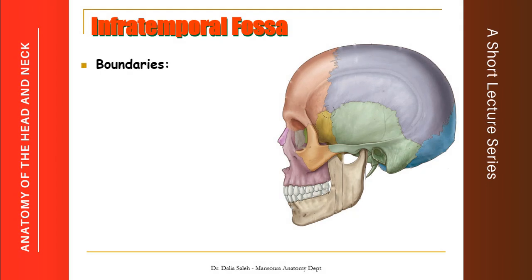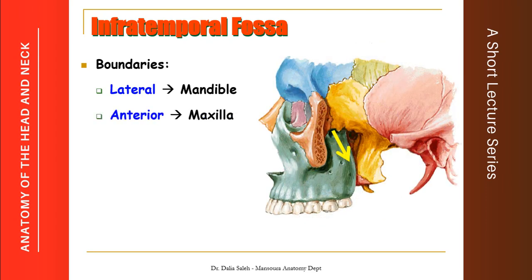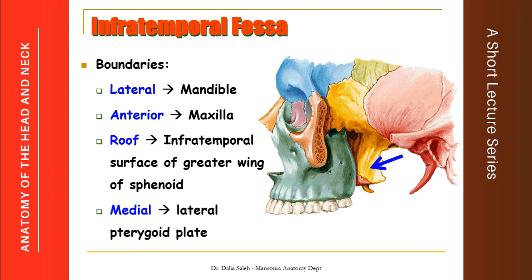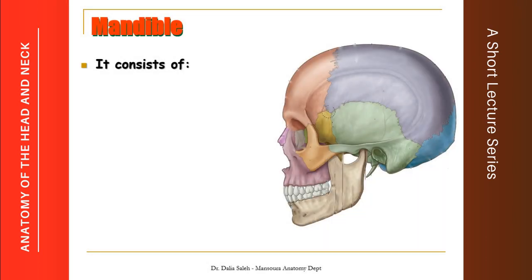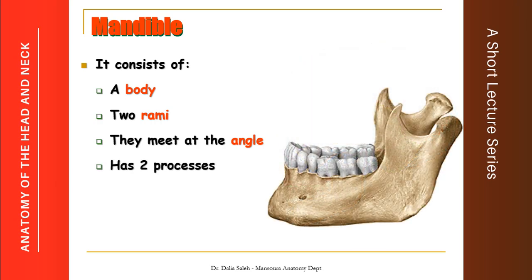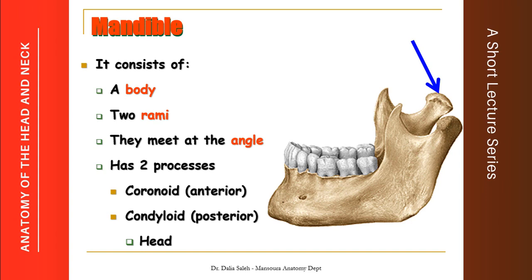For the infratemporal fossa, its boundaries are as follows: laterally, we have the ramus of the mandible. In this picture, we removed the ramus of the mandible and we can see the anterior wall made by the maxilla. Its roof is made by the infratemporal surface of the greater wing of the sphenoid. Medially, we have the lateral surface of the lateral pterygoid. The mandible is formed of a body and two rami, where the body and the ramus meet at the angle of the mandible. The ramus of the mandible has two processes: anteriorly the coronoid process and posteriorly the condyloid process, which carries the head and neck of the mandible.